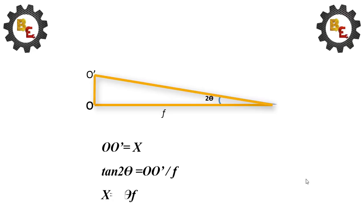O' is nothing but x. x equals 2θ into focal length. This way, we can find out the differences from main picture.